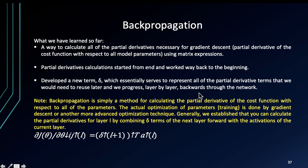Backpropagation is simply a method for calculating the partial derivative of the cost function with respect to all of the parameters. The actual optimization of parameters is done by gradient descent or another more advanced optimization technique. Generally we establish that you can calculate the partial derivative of layer one by combining these terms for the next layer forward with the activation of the current layer.